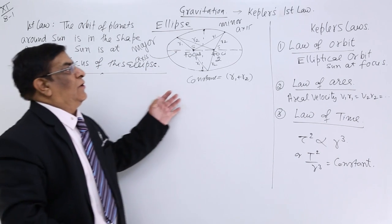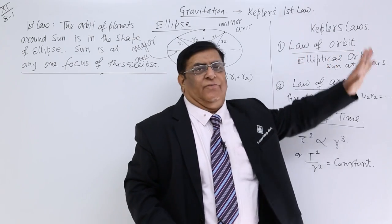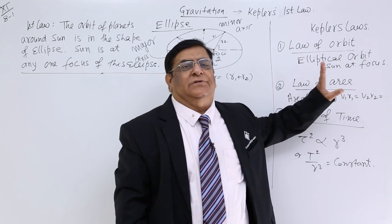So this is the first law and this is known as the law of orbit. It tells us about the shape of the orbit.